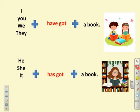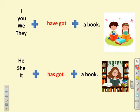Who are the friends of 'have got'? I have got a book. Good job! You have got a book. We have got a book. They have got a book. So 'have got' has four friends: I, you, we, and they.